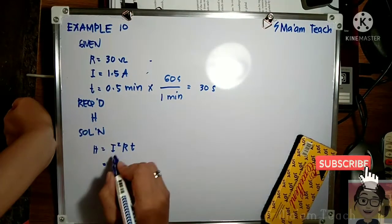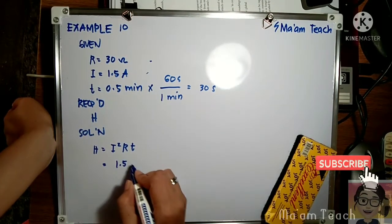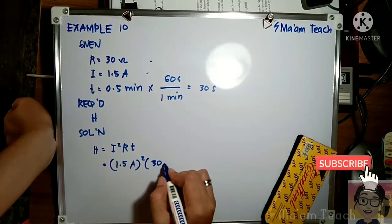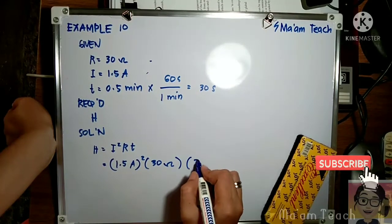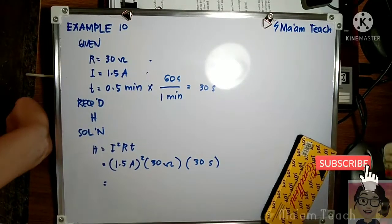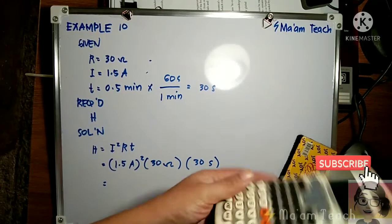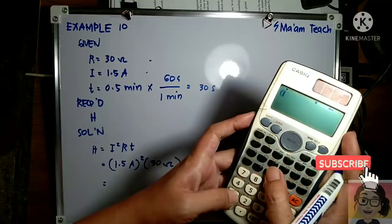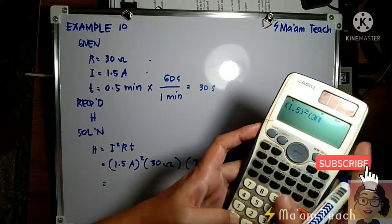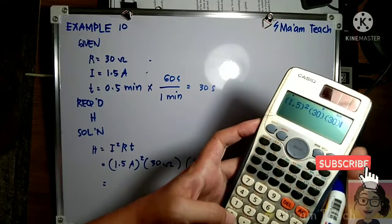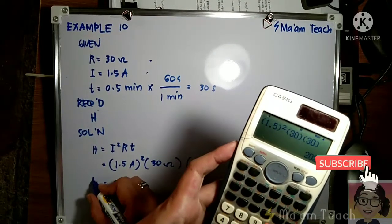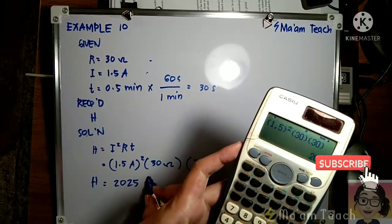Substituting here we have 1.5 amperes squared times 30 ohms times 30 seconds. Therefore, we have 1.5 squared times 30 times 30, so we have 2025.